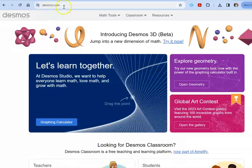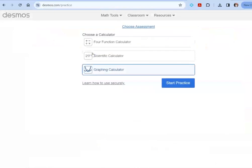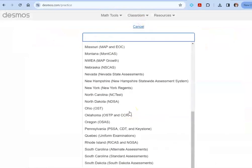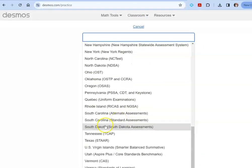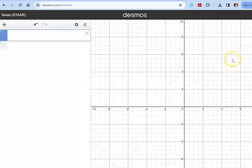When you go to Desmos.com, you'll go to Math Tools here at the top. Choose Test Practice. At the top, choose your assessment and scroll down to Texas STAAR and Start Practice. This is the graphing calculator that was used on all of the items in all five practice sets.